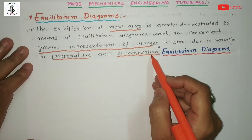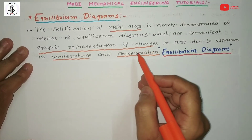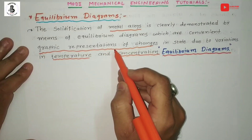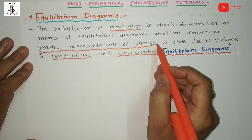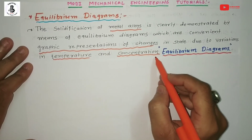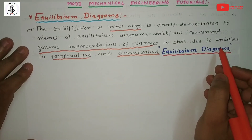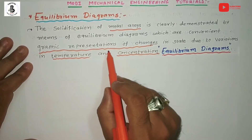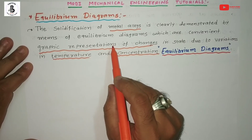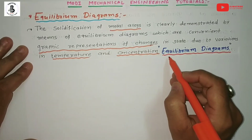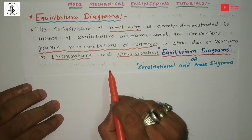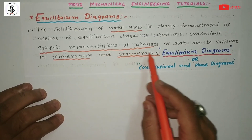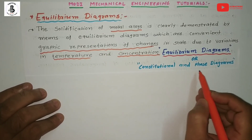At different temperatures and concentrations, a material or metal alloy will have different kinds of phases. The graphical representation of phase changes with respect to temperature and concentration is called an equilibrium diagram. That set of conditions — temperature and concentration on a graphical representation — is also known as a constitutional diagram or phase diagram.